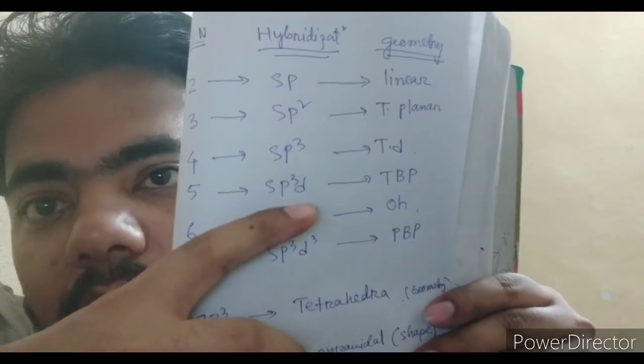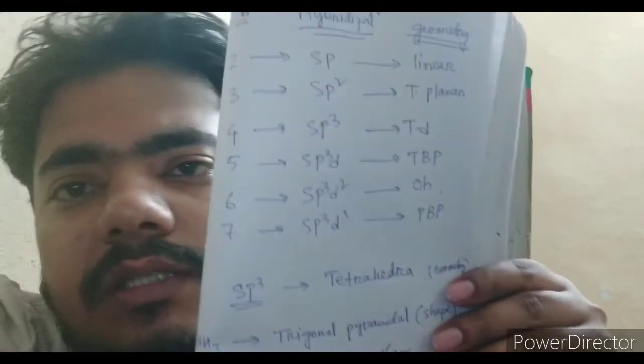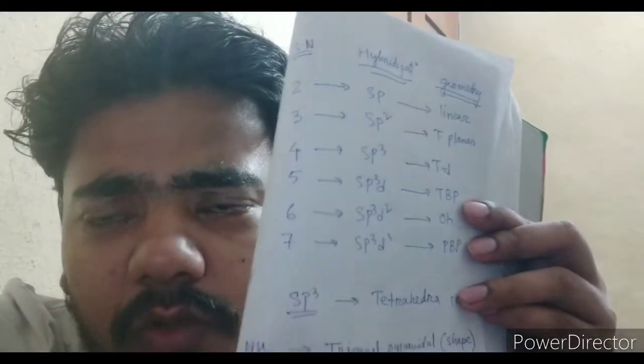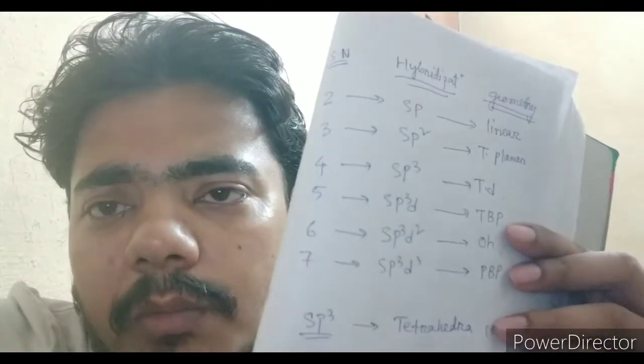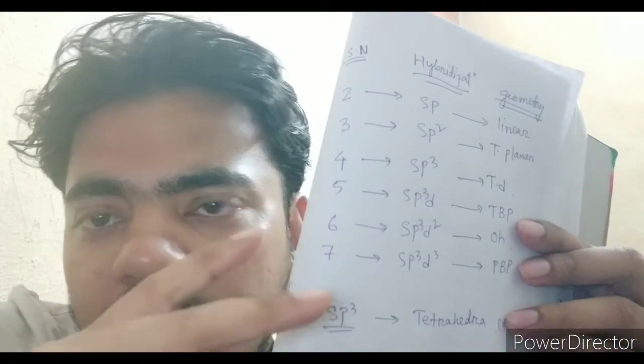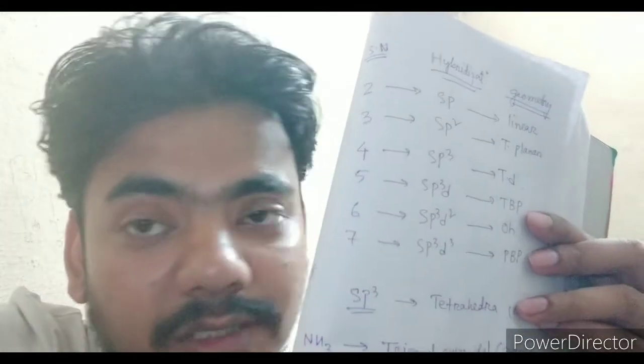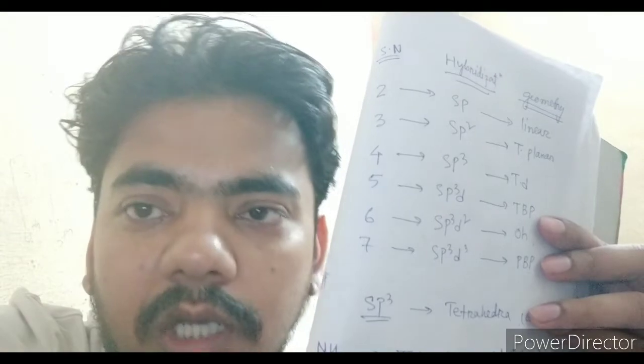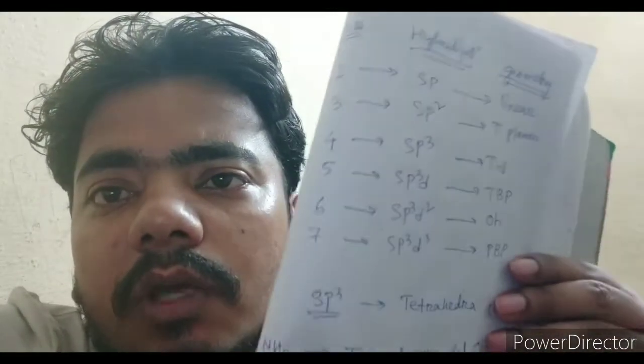If the steric number is five, the hybridization is sp3d and the geometry is trigonal bipyramidal. This geometry has a lot of importance because there is something called Bent's rule, which I have already discussed in earlier videos on my channel. In trigonal bipyramidal, there are five bonds: three are equatorial and two are axial. Axial bonds have higher length than equatorial, and there is a rule that more electronegative groups prefer the axial position.